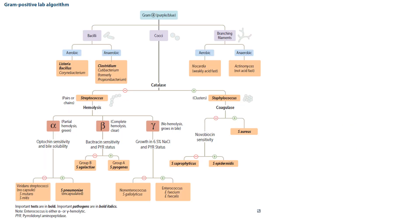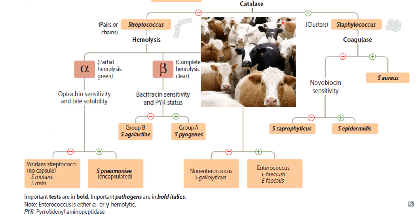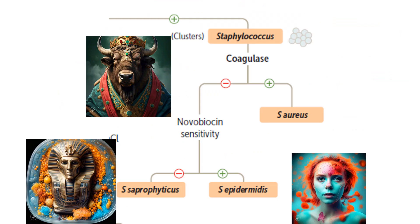Our final section focuses on the cocci. The first branching point in the chart is whether the organism is catalase positive or catalase negative. 'Catalase' sounds like 'cattle,' and cattle usually hang out in clusters, which tells us Staphylococcus is catalase positive. Streptococcus is catalase negative — 'strep' sounds like a strip, which is a line, while 'staff' groups into clusters.